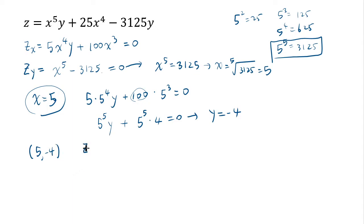Okay, now let's compute zxx, which means you differentiate this again by x. That's going to give you 20x cubed y and then plus 300x squared.